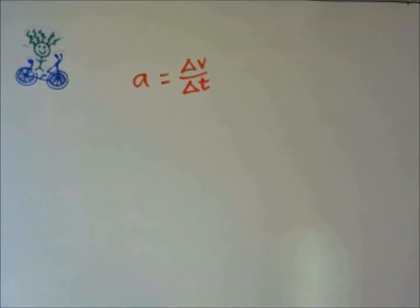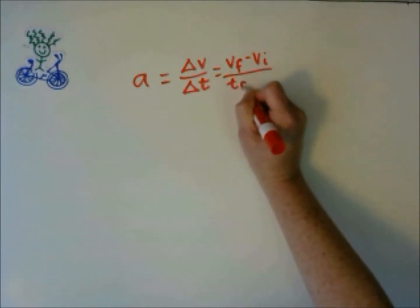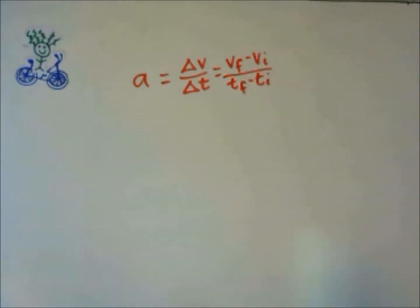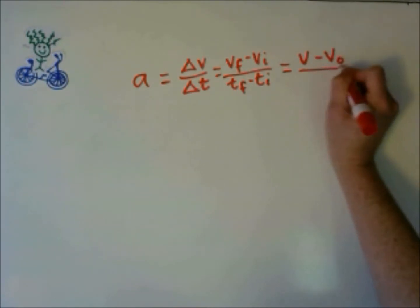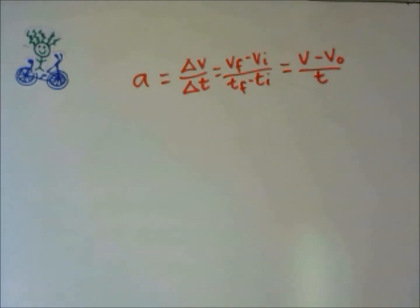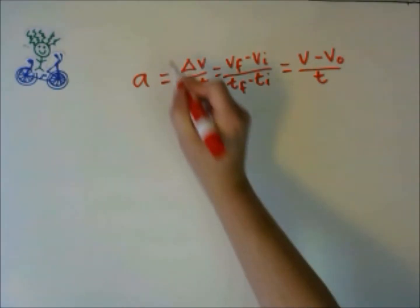Our first kinematics equation we can get from our definition of acceleration. Acceleration is the change in velocity over change in time. We've written it as Vf minus Vi over Tf minus Ti. We can write it another way. So a shorter way to write it is V stands for final velocity.